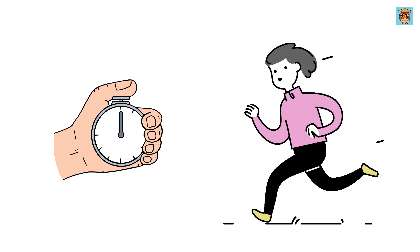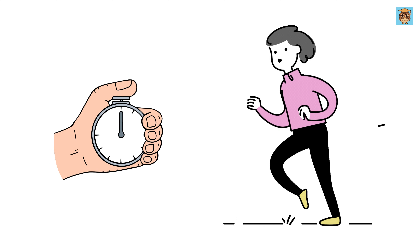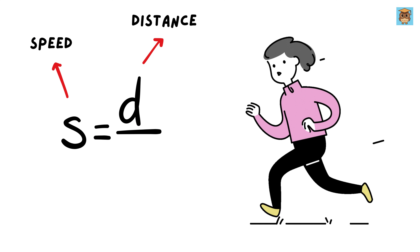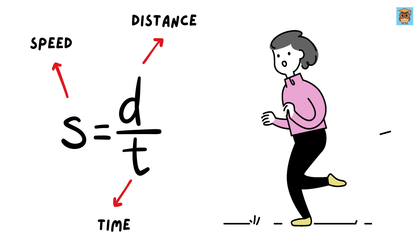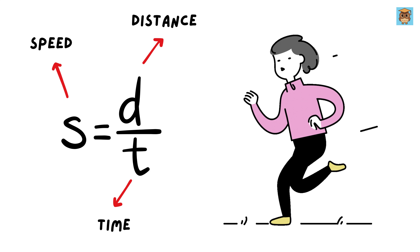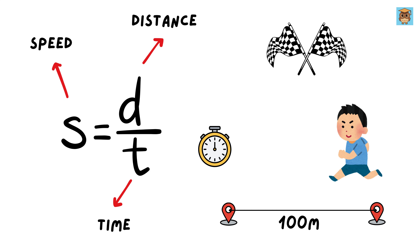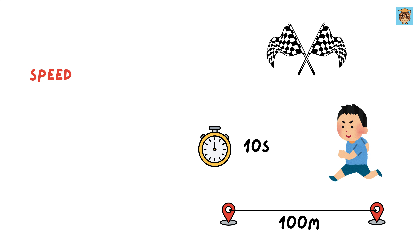Imagine you're calculating the speed of a runner by dividing the distance they cover by the time it takes them to run. For example, if the race is 100 meters long and the time taken is 10 seconds, the speed is straightforward: 100 divided by 10, or 10 meters per second.